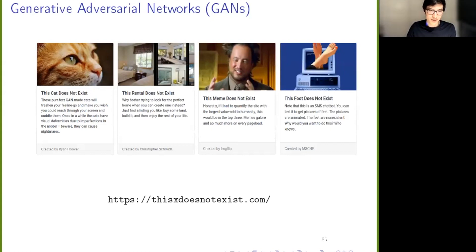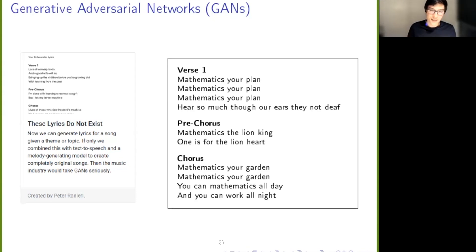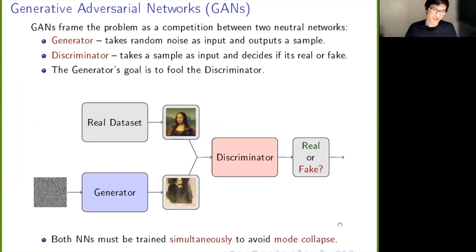There's one more that I thought I'd just look into a little bit closer: these lyrics do not exist. Since this is a mathematics event, I thought I would have a go at that. I selected an EDM track, I said it should have a happy mood, and I got it to generate some lyrics about the theme mathematics. I got this little gem here. The chorus: Mathematics, your garden mathematical. Garden you can mathematics all day and you can work online. I think you can get bonus points in this Olympiad if you put these lyrics to music and make a recording and send it to us. Yeah, that's my challenge.